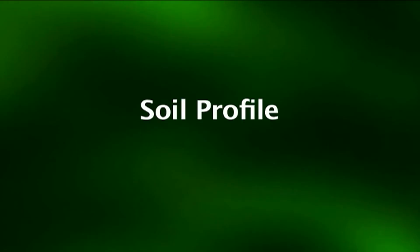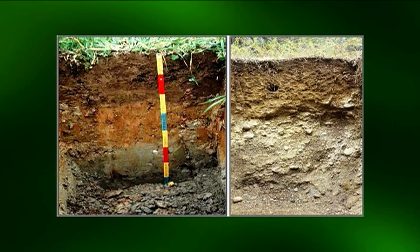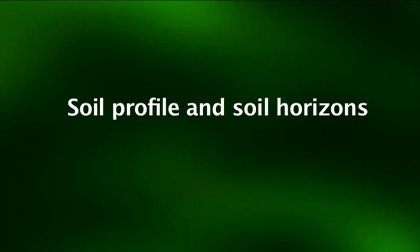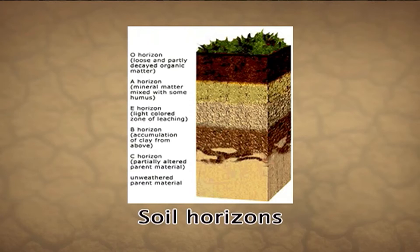Welcome dear students. Today's topic is soil profile. Examination of a vertical section of soil, as seen in a roadside cut or in the walls of a pit dug in a field, reveals the presence of more or less distinct horizontal layers. Such a section is called a profile, and individual layers are called horizons. Every well-developed undisturbed soil has its own distinctive profile characteristics.